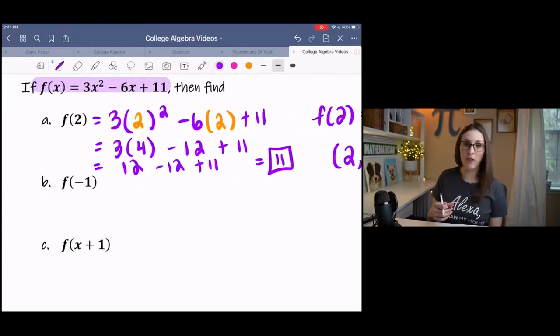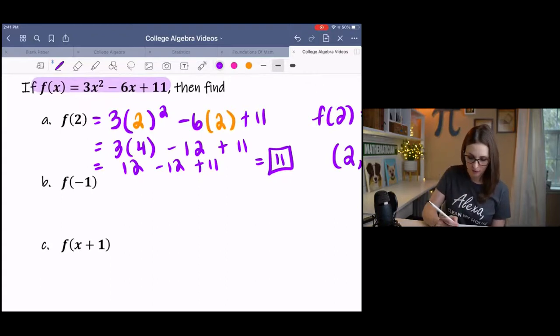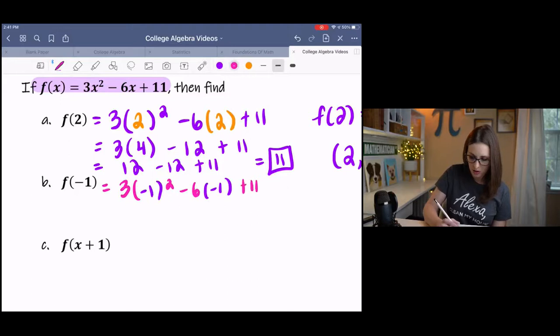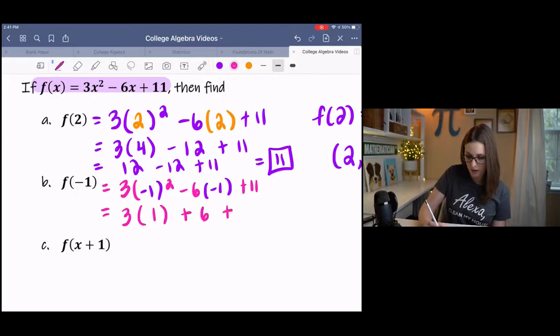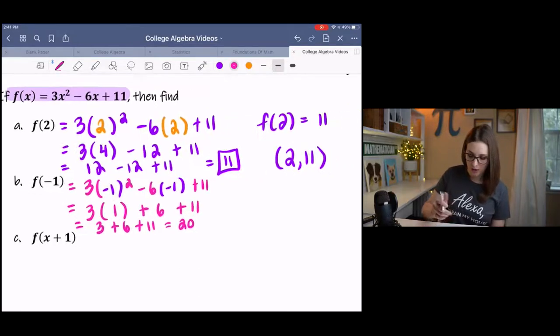The next one wants us to evaluate at negative 1. Go ahead and pause it and try it and then come back. Hopefully yours looks like this. Got kind of wonky with my colors, but that's okay. We're going to do the same process. Negative 1 squared is positive 1, and then plus 6 plus 11. So we have 3 plus 6 plus 11 is 20. Which means that f of negative 1 is 20, which is negative 1 comma 20.